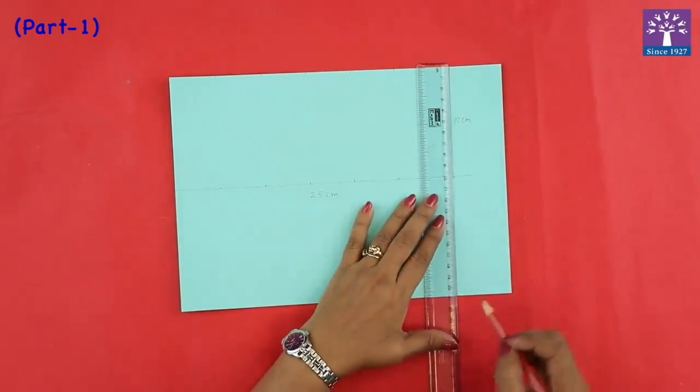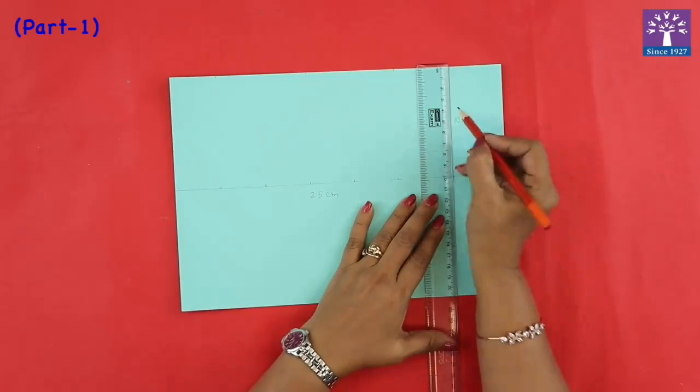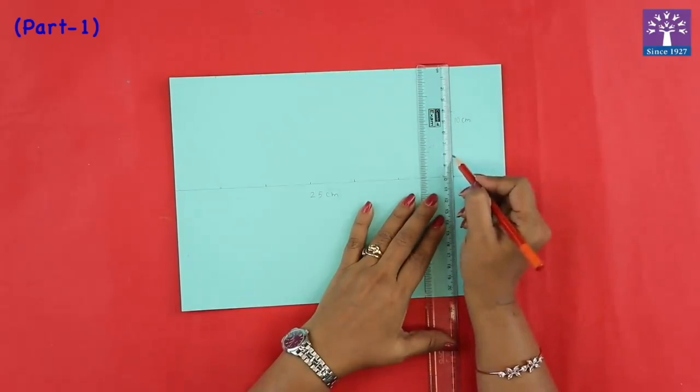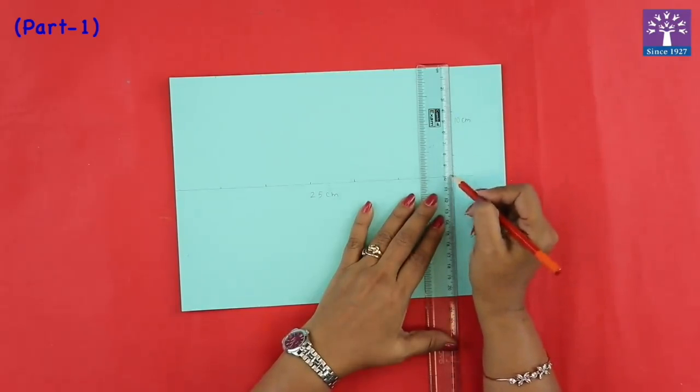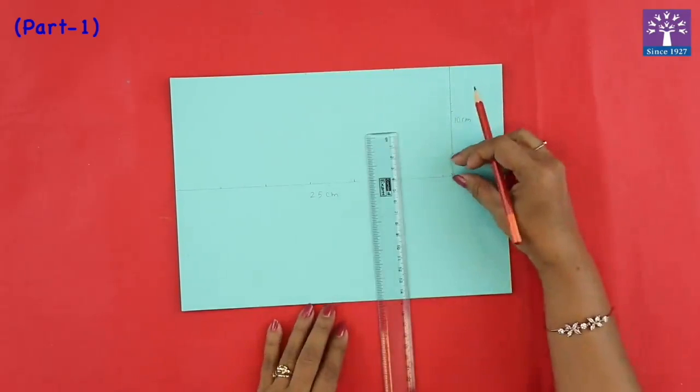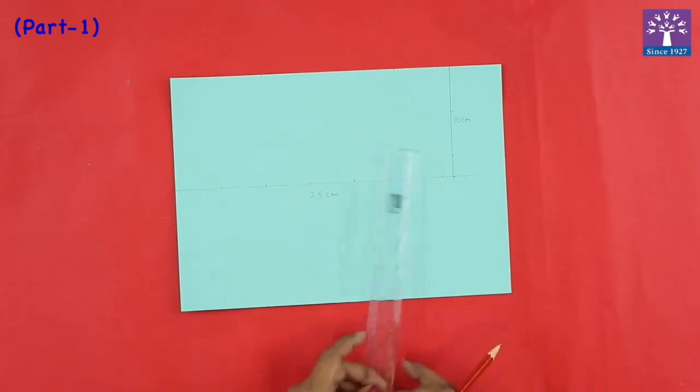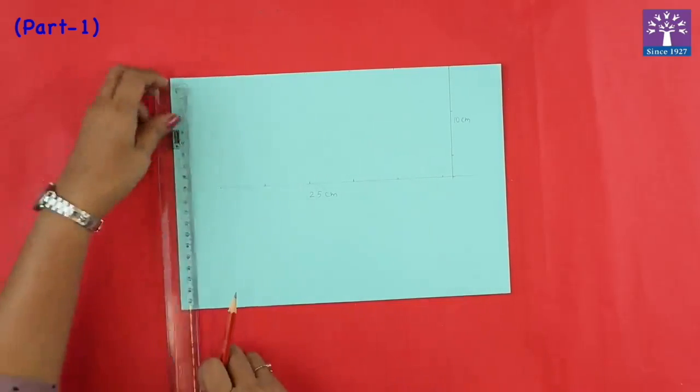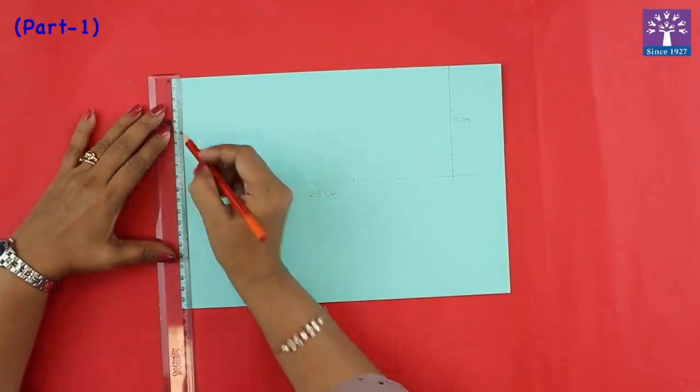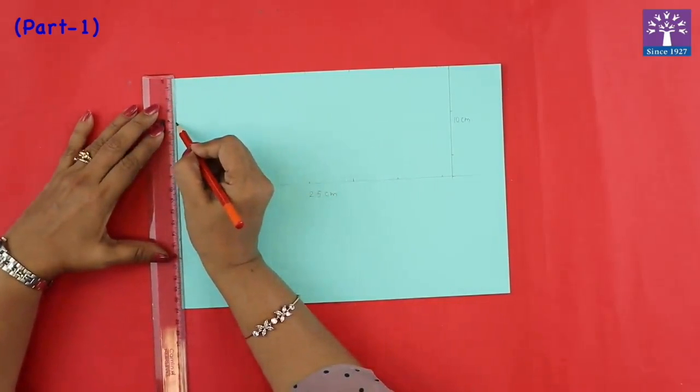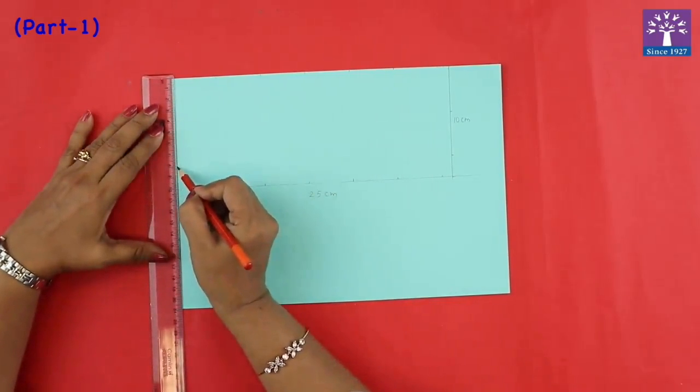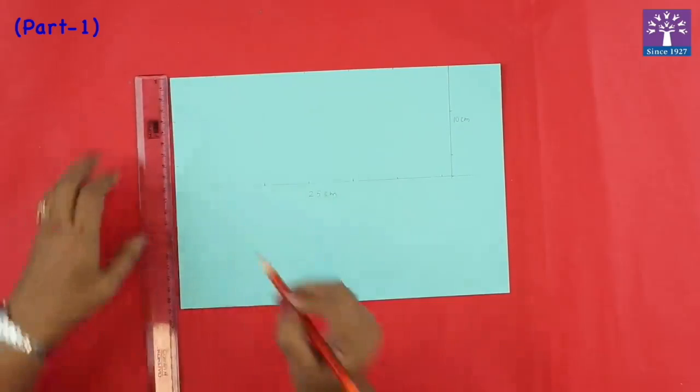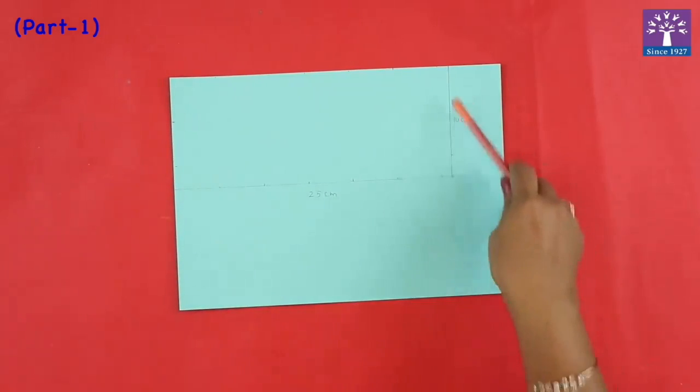Mark four centimeter in the breadth of the rectangular shape. So here when you mark four centimeter you will get two centimeters gap remaining at the bottom. Now we mark four centimeter in the breadth also. Now we will draw lines and join all these dots.